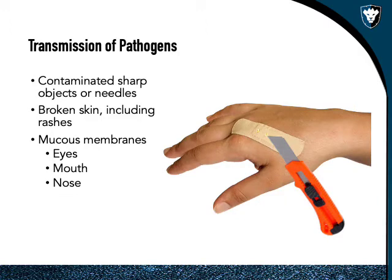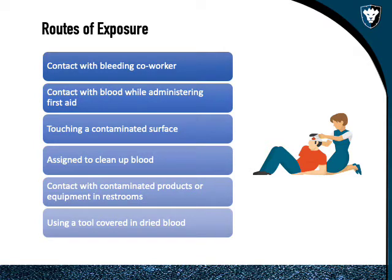Transmission is relatively easy to isolate. If a sharp or needle is contaminated it can be passed to another person if it punctures their skin and enters the bloodstream. Broken skin and mucous membranes can also transmit some pathogens — not all. For example, HIV is not transmitted through mucous membranes whereas hepatitis can be.